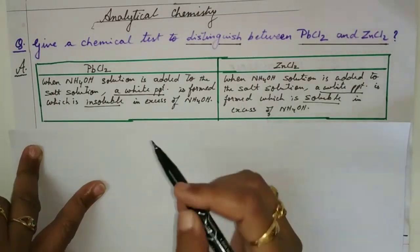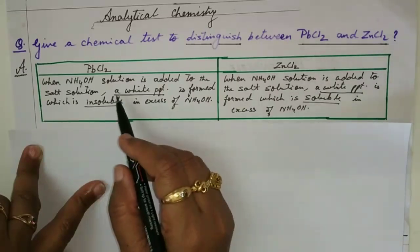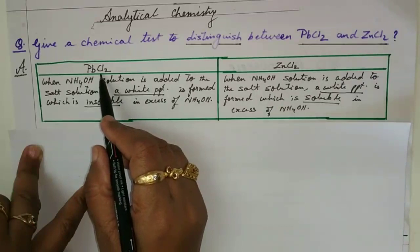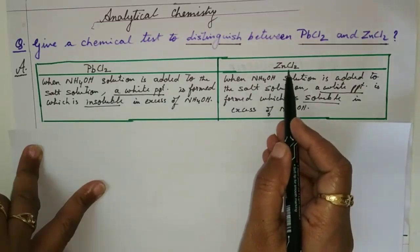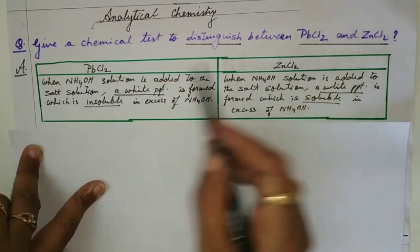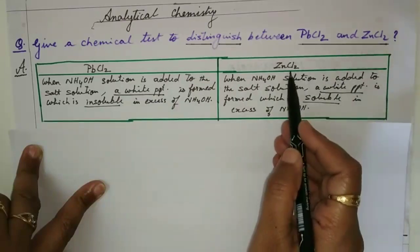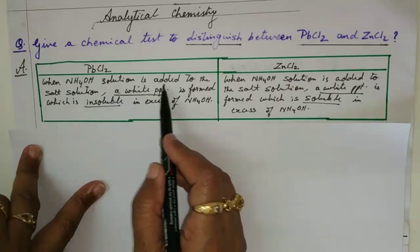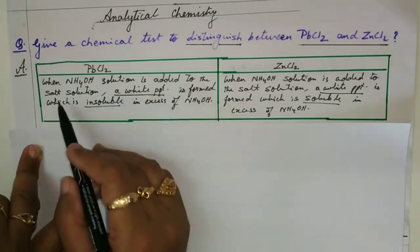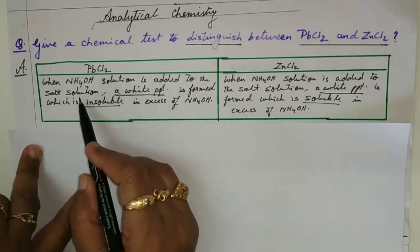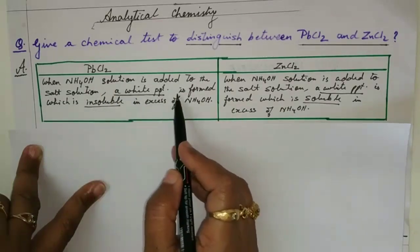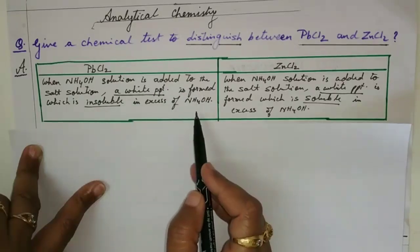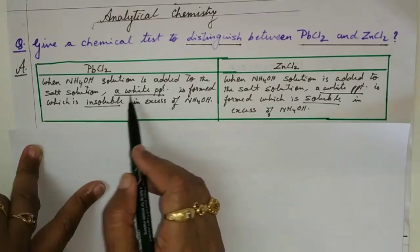So how are you going to write the answer? Write the two substances given — in this case lead chloride and zinc chloride. When ammonium hydroxide solution is added to the given salt solution, a white precipitate is formed which is insoluble in excess of ammonium hydroxide. Please underline the keyword.